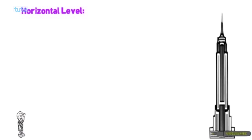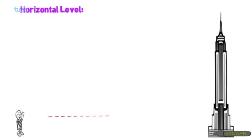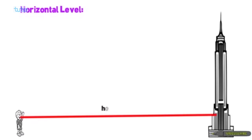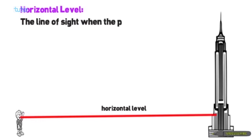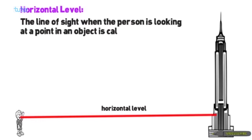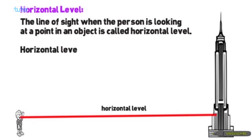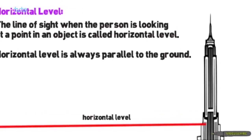Now let's see what is meant by horizontal level. A boy is standing on the ground at a certain distance from a tower, and he is looking exactly straight at a certain point on the tower. That imaginary line is called the horizontal level. Horizontal level is the line of sight when the person looks straight at a point on an object, and it is always parallel to the ground.